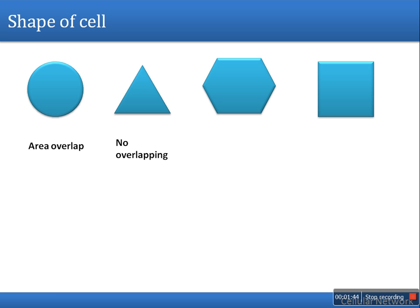In the case of triangle, hexagonal, and square, there is no overlapping. So all these are geometric and except circle, all have no overlapping.